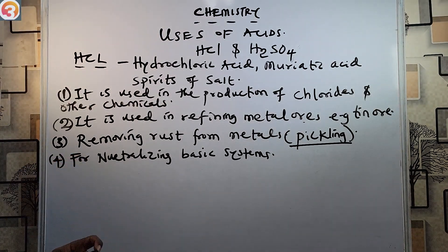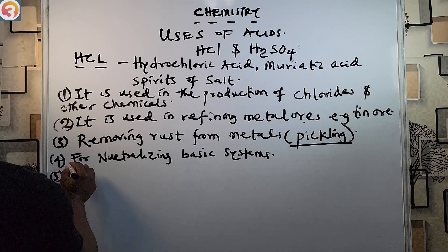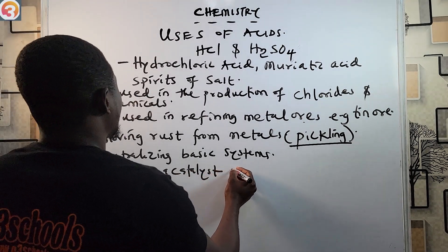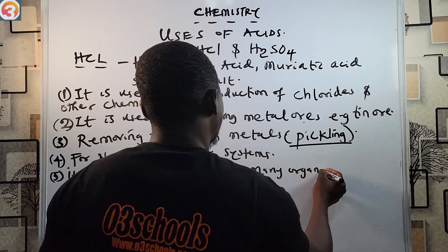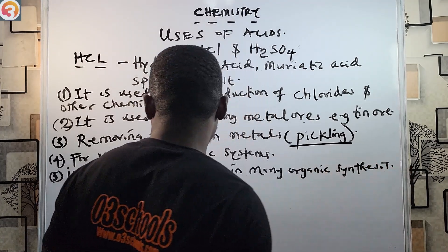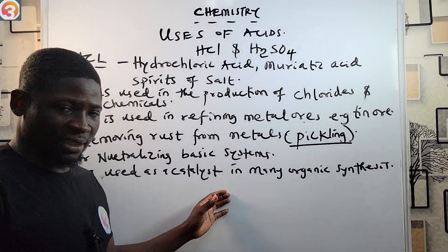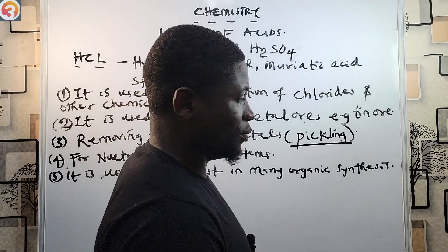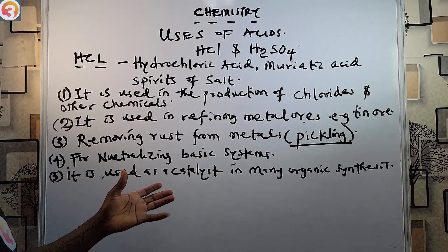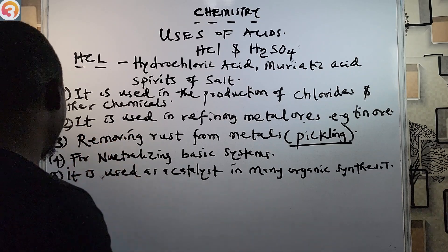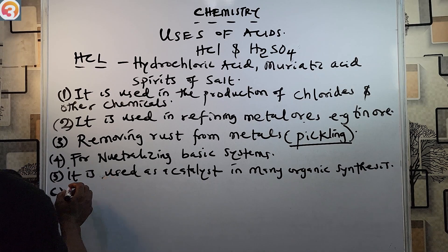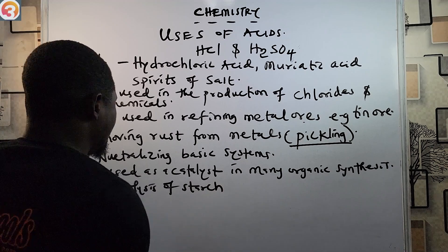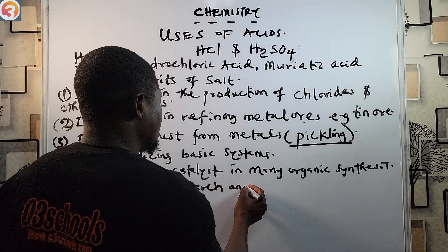Number five: HCl can be used as a catalyst in many organic syntheses. As a catalyst, it can speed up or slow down the rate of a chemical reaction. Number six: it is used for the hydrolysis of starch and proteins.